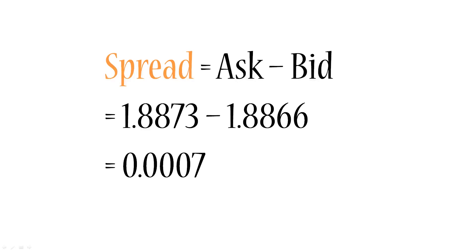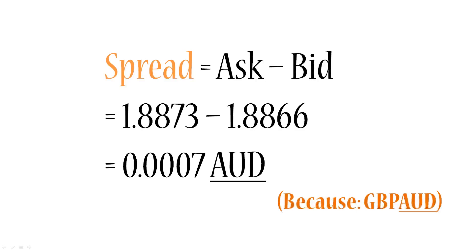Specifically, that is 0.07 of an Australian cent. This is in Australian dollars because the currency pair is British pound / Australian dollar, so Australian dollar is the quoted currency. Remember our examples with apples — the British pound here is like the apple, and the Australian dollar is the currency it's being valued in.